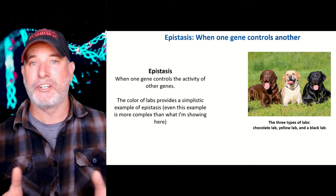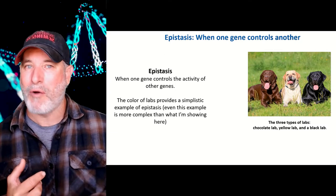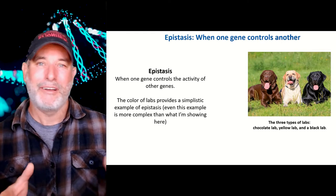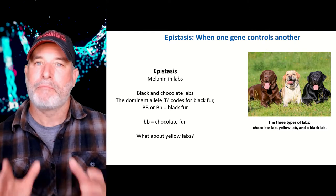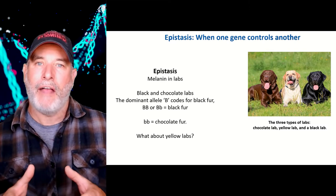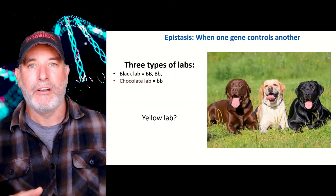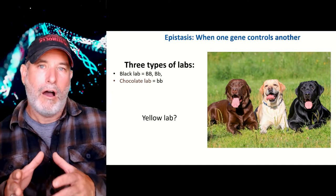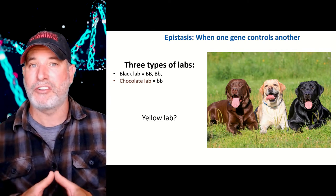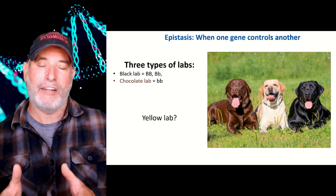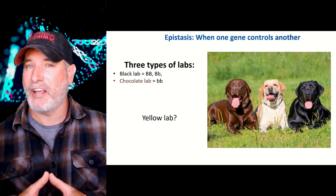We've got black labs, chocolate labs, and yellow labs. Fur color is produced by melanin — there are two different types: black melanin and brown melanin — and then there's no melanin, which gives you a yellow lab. Black is a dominant allele and chocolate is recessive, so if a lab has at least one dominant black allele you potentially have a black lab, and if it has two recessive alleles you could potentially have a chocolate lab.